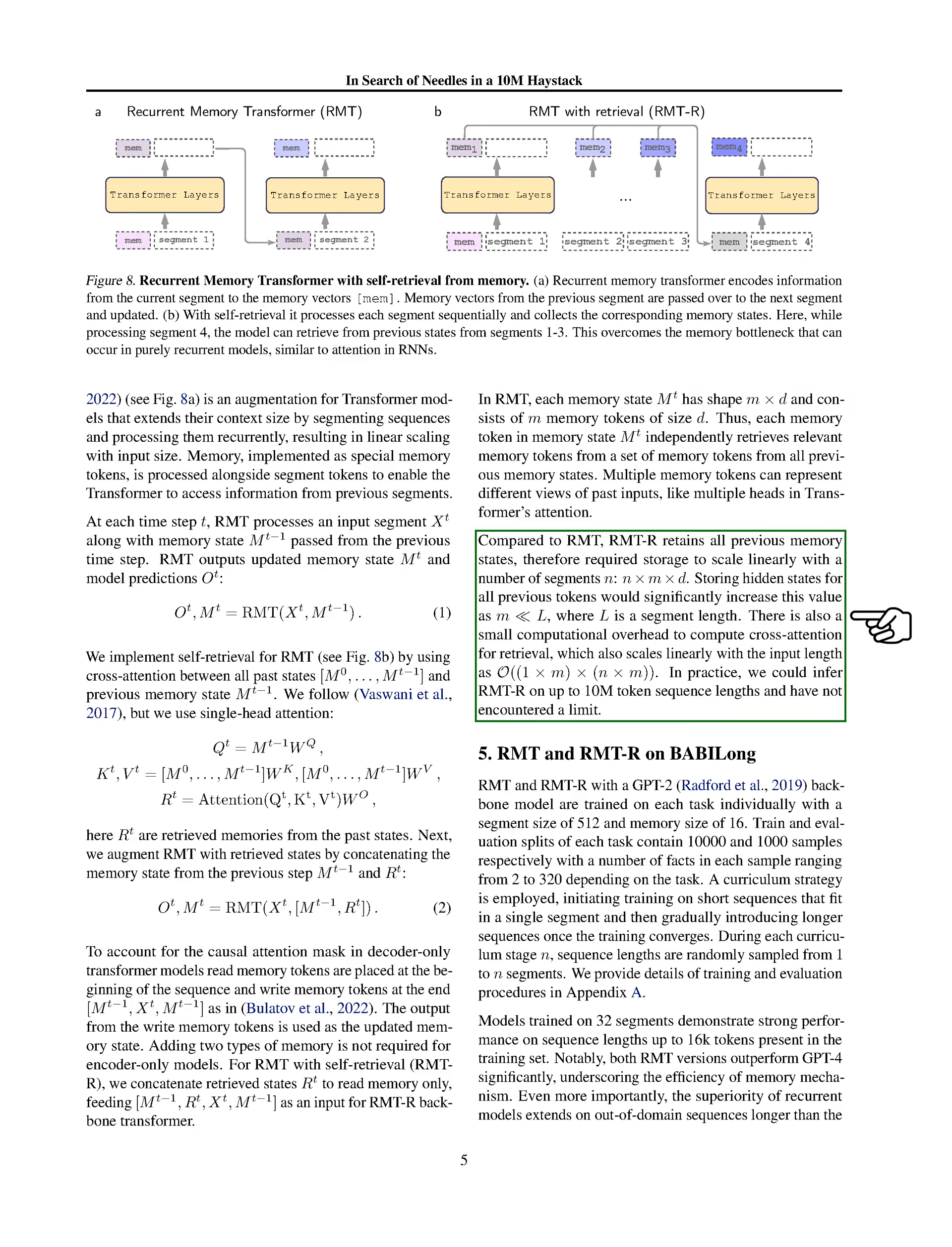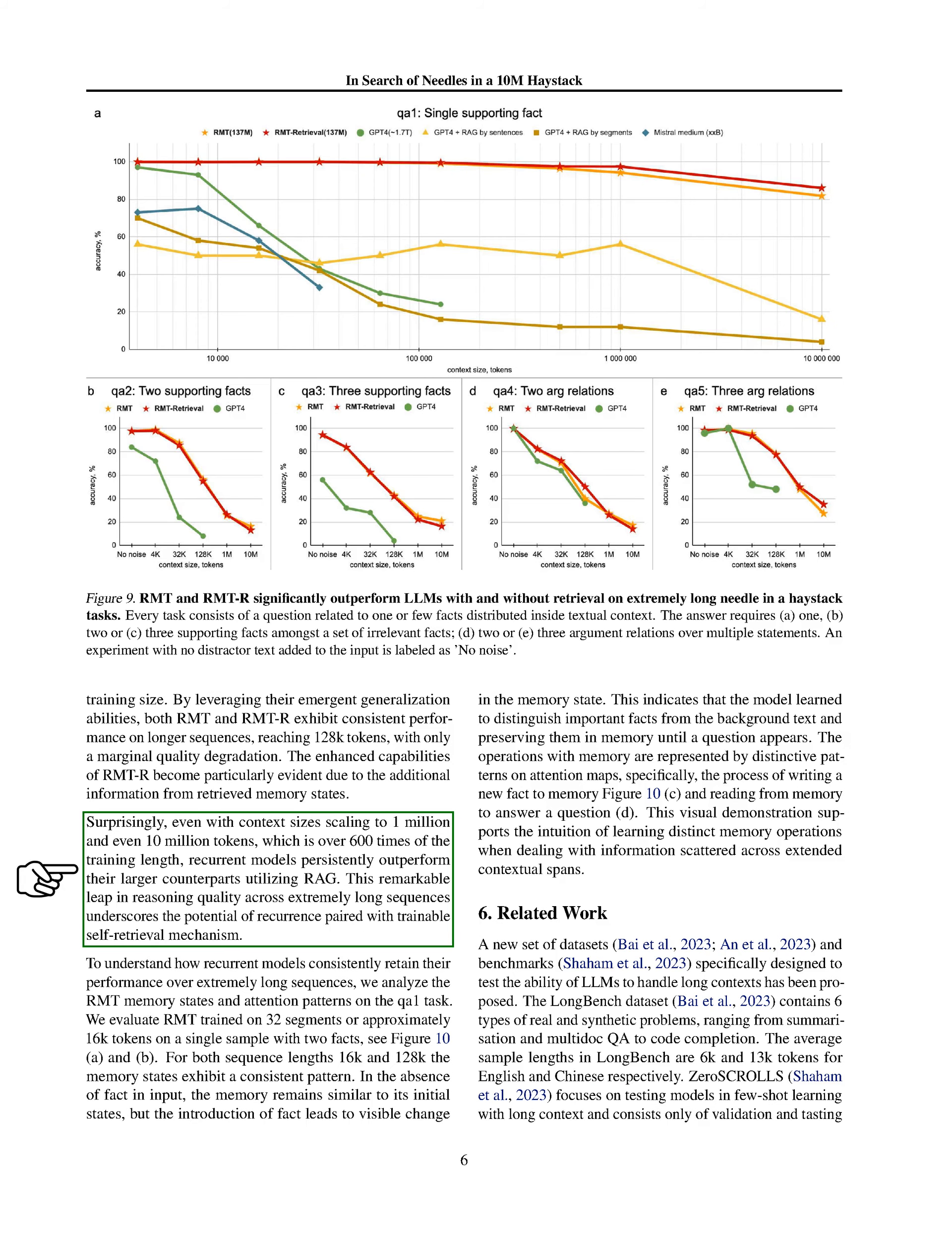However, with RMTR, we keep all previous memory states, which means the amount of memory needed grows linearly with the number of segments processed. We tested RMT and RMTR models, both built on a GPT-2 architecture, on various tasks with different lengths of input sequences. We started training with shorter sequences and gradually moved to longer ones. Our models showed impressive performance, even outperforming GPT-4, especially on sequences longer than those seen during training. This demonstrates the model's ability to generalize and handle extremely long sequences effectively, thanks to the memory mechanism and the self-retrieval feature.